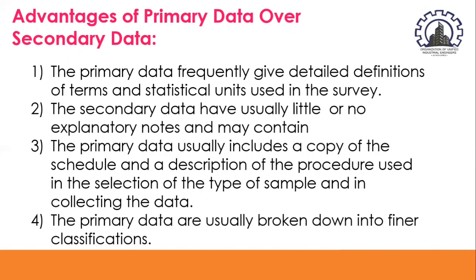These mistakes often arise from transcription of the figures from the original and primary source. The third advantage: primary data usually include a copy of the schedule and a description of the procedure used in the selection of the type of sample and in collecting the data. This gives the user an idea of accuracy, applicability, and limitations of the survey results. And finally, primary data are usually broken down into finer classifications, while secondary data often omit or combine categories.